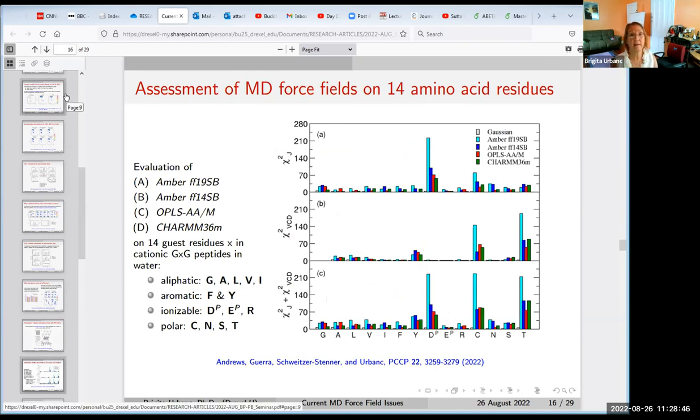We tested AMBER-19SB, which is amino acid specific in the sense that the dihedral function in that AMBER force field has amino acid specificity. We checked AMBER-14SB and the newest OPLS and CHARM36M. We tested these force fields in the same way as we tested alanine and glycine on 14 total important amino acids. That includes five aliphatic, two aromatic, three ionizable, and four polar. These are the chi-square functions.